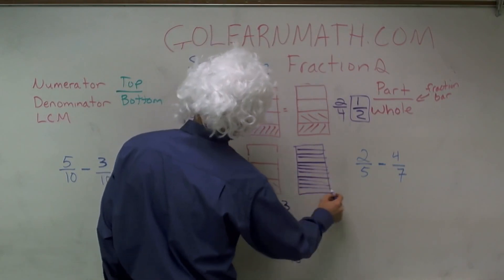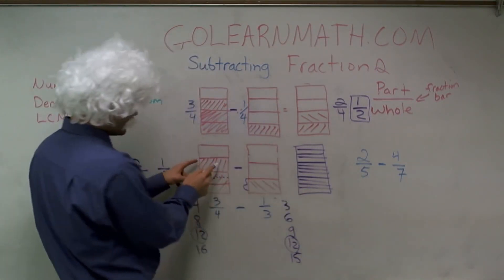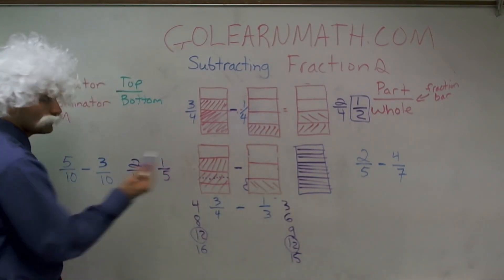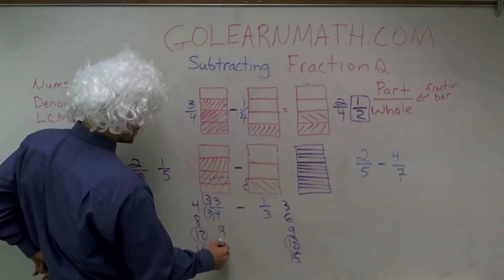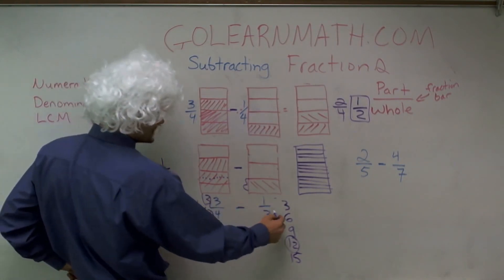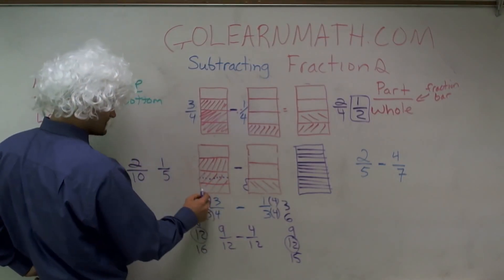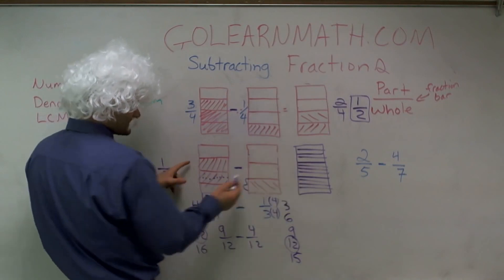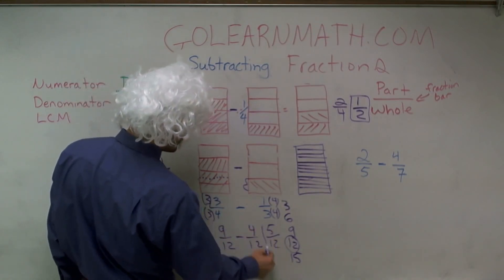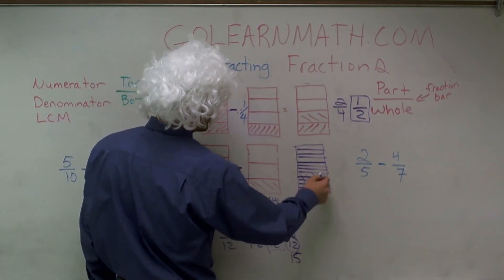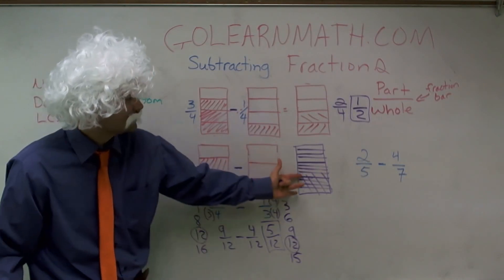So I can break up my result into twelfths. How many twelfths is one-third? That's going to be four of them. And how many twelfths is three-fourths? To get four to be twelve, I multiply by three over three, giving me nine twelfths. To get three to be twelve, I multiply by four over four, giving me four twelfths. So nine twelfths minus four twelfths equals five twelfths.